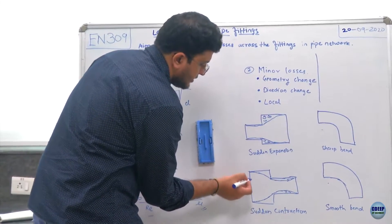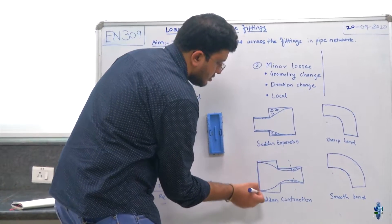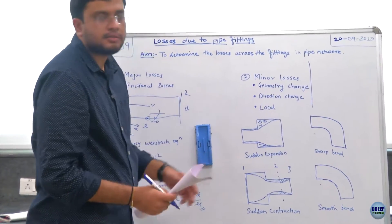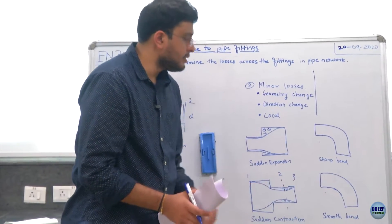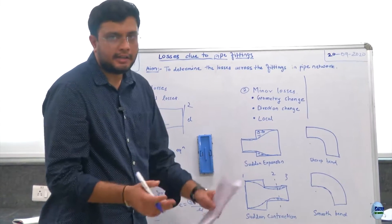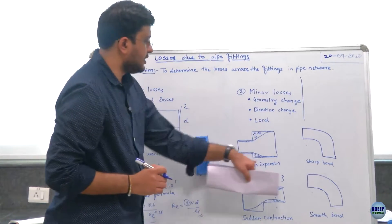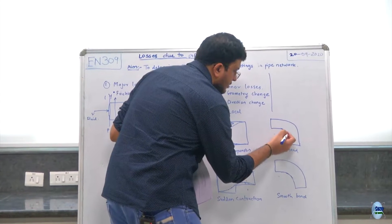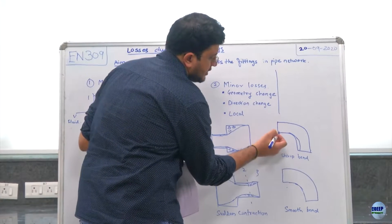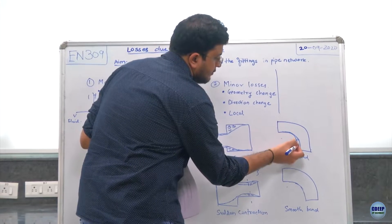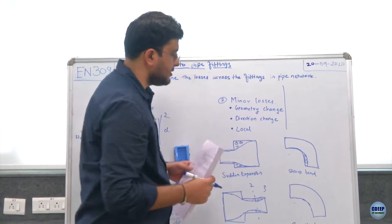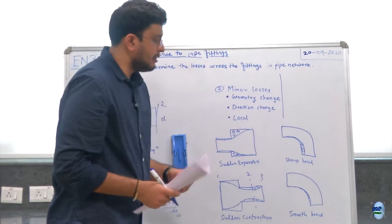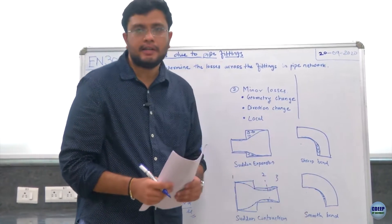In a sudden contraction, we can divide the flow into three sections. From section 1 to 2 the head loss is appreciable, but from section 2 to 3 — which can be considered as a sudden expansion — the head loss is higher. In a sharp bend, due to the sudden change in direction, fluid separation takes place, eddies form in that section, and these eddies are responsible for the head loss. Even in a smooth bend the magnitude of separation is lower, but eddies still form and lead to head loss.